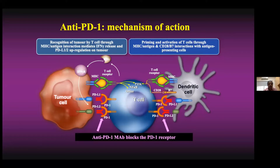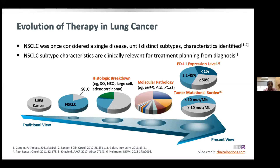The tumor cell has mechanisms by which it suppresses the T-cell and the antigen-presenting cell. By taking away this blockage — using monoclonal antibodies that block the binding of the ligand from the tumor cell to the PD-1 and PD-L1 receptors on the T-cell — we are actually enhancing or recruiting the T-cell into the immune system. This is the basis for the use of immunotherapy in cancer treatment.